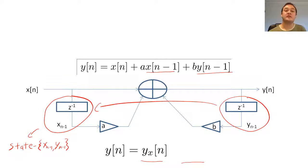We call y sub x of n the zero state response. The zero state is when all of the delay registers equal zero. We call y sub s of n the zero input response. The zero input response is what y of n would be if we only input zero for all eternity. We call this property of y of n the decomposition property.